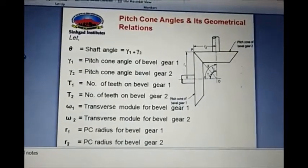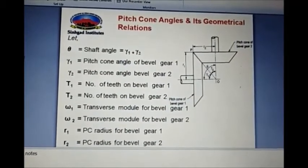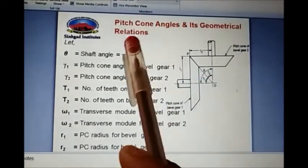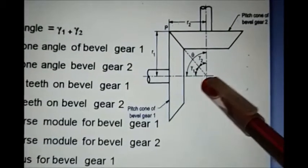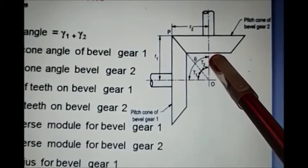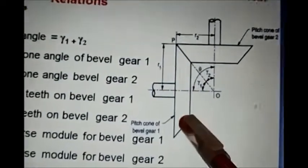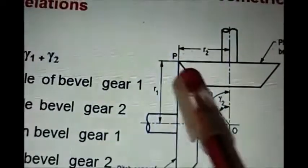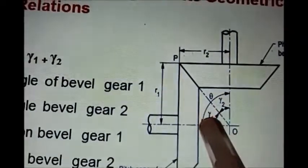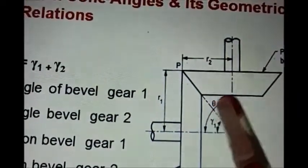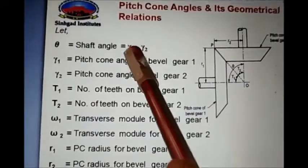Let's discuss the theory of bevel gear pitch cone angles and their geometrical relationship. Gamma 1 and gamma 2 are the pitch cone angles of gear 1 and gear 2 — the angle between the pitch cone element and the axis of the gear. We have gamma 1 plus gamma 2 equal to theta, which is the shaft angle.